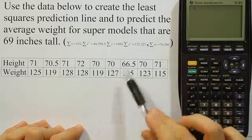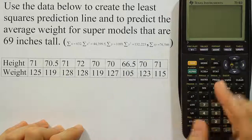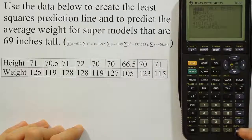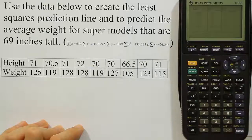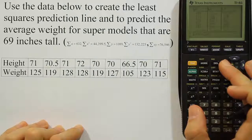What I want to do first is enter the data into a list. So I need to do one list for height and one list for weight. Let's go ahead and hit the stat key. We'll hit enter to get to the edit screen where we can edit these lists. Now you can see my lists are filled up here, so I'm going to clear them.